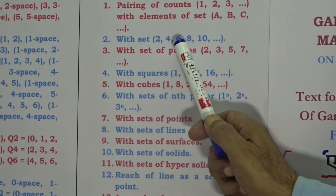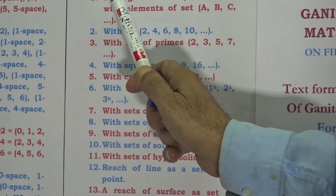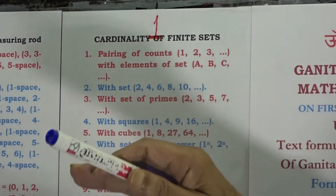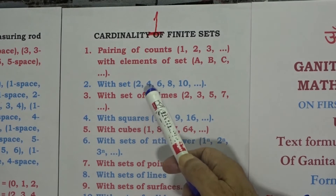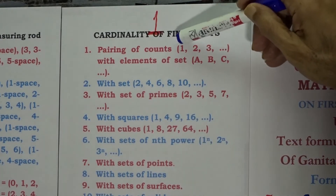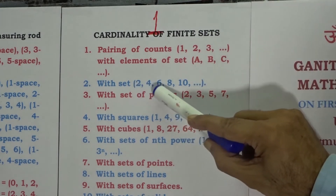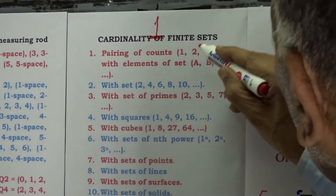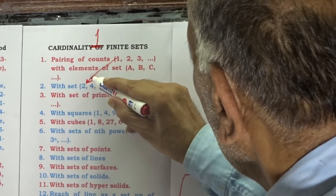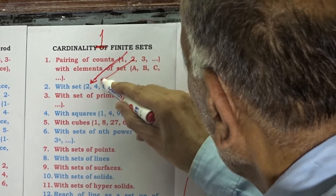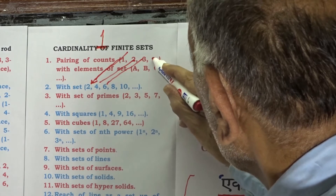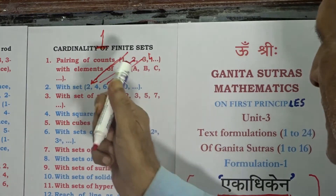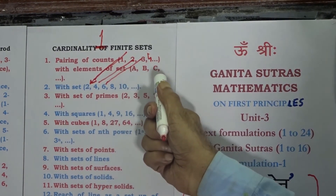With a set say {2, 4, 6, 8, 10} we can have a pairing of counts with the elements A, B, C, etc. If our set is {2, 4, 6, 8, 10} then we can have a pairing of 1, 2, 3, 4, 5 with 2, 4, 6, 8, 10 respectively — having first pairing of 1 with 2, then one more step takes to 2 with 4, then 3 with 6, reaching 4 with 8, 5 with 10, and so on. This pairing of counts with elements of the set {2, 4, 6, 8} gives a concrete illustration of how the working rule '1 more than before' of the formulation Eka Adhiken helps us establish a pairing of counts.